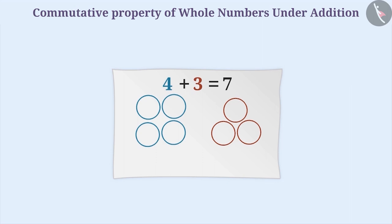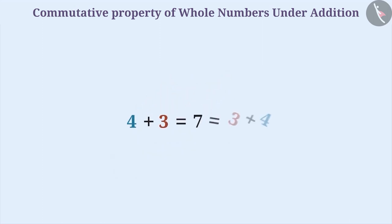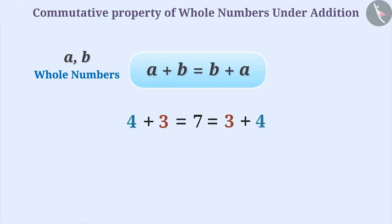Thus, the commutative property of addition tells us that there will be no change in the final number even if we change the order of the numbers, which means a plus b equals b plus a. So whenever you wish to find the sum of two whole numbers, you can add them in any order. You will get the same result even on changing the order of the numbers.